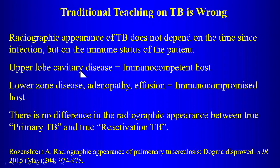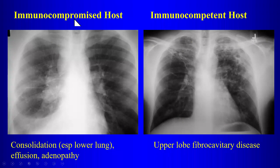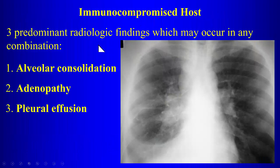The radiographic appearance does not depend on the time since infection but on the immune status of the patient. Upper lobe cavitary disease is seen in immunocompetent patients regardless of when they were infected. Lower zone disease, adenopathy, and effusion are associated with an immunocompromised host. There is no radiographic difference between true primary TB and reactivation TB.